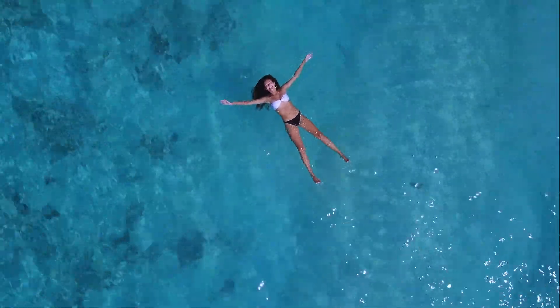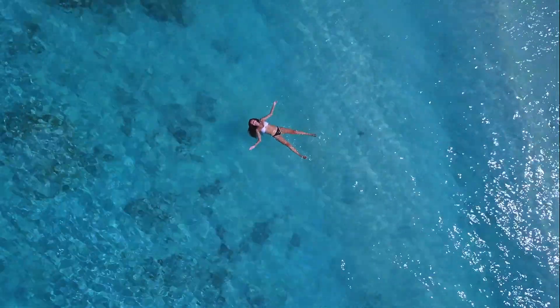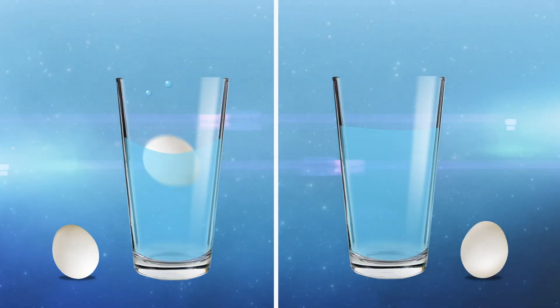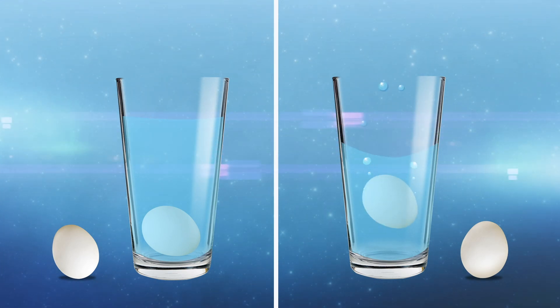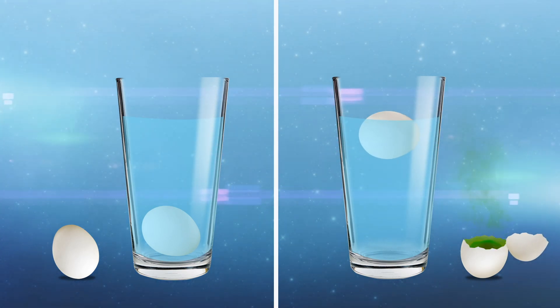This is the same reason you can more easily float in the ocean as compared to a lake. Did you also know you can tell if an egg is rotten or not using the same trick? A fresh egg will always sink to the bottom, but a rotten egg will always float.